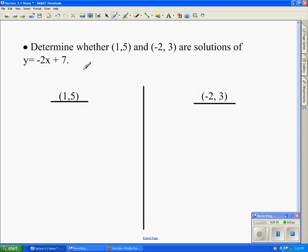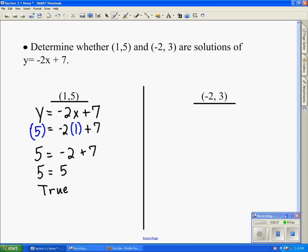Next, they ask us to determine whether the ordered pair (1, 5) and the ordered pair (-2, 3) are solutions of the equation. So I take my original equation, y = -2x + 7, and this time I want to substitute 1 in for x and 5 in for y, and leave everything else the same and solve. 5 equals -2 plus 7. 5 equals 5. This is a true statement. Therefore, yes, this is a solution to the given equation.